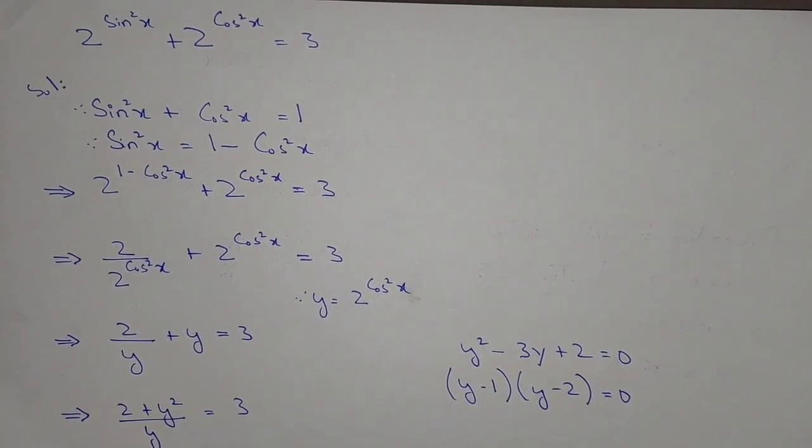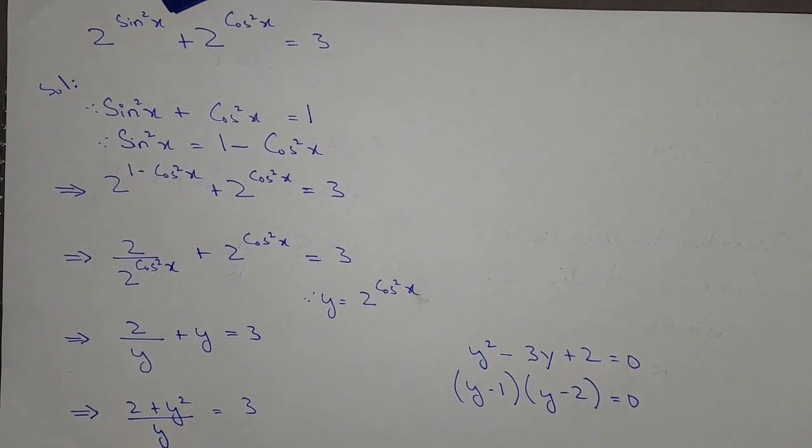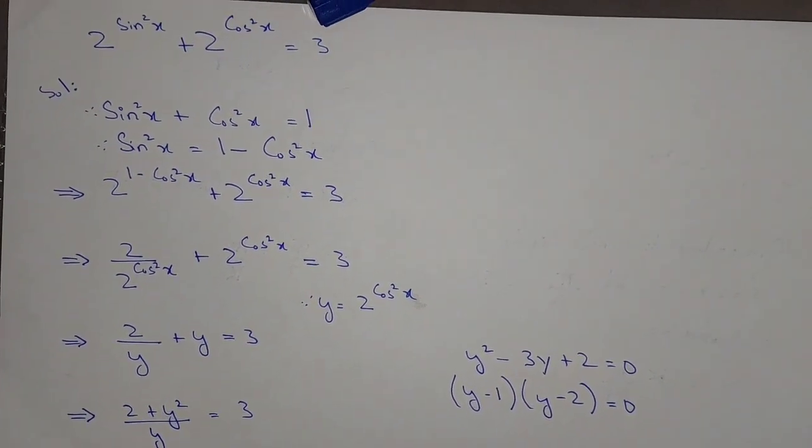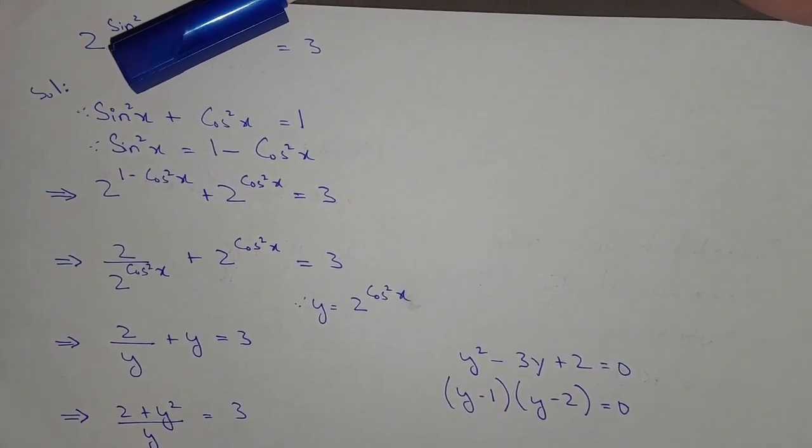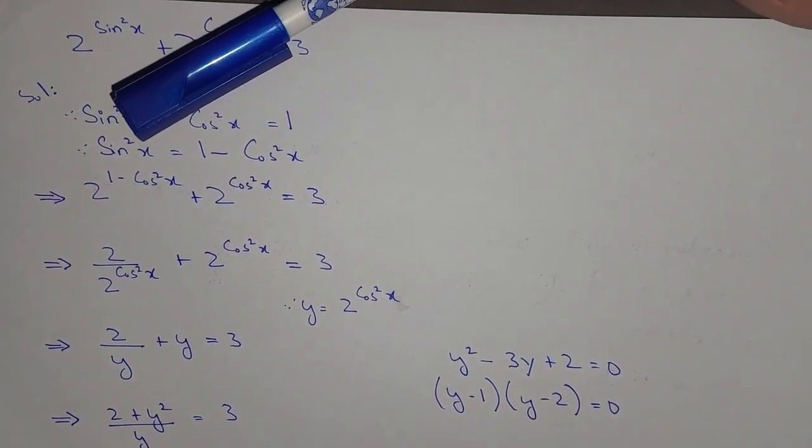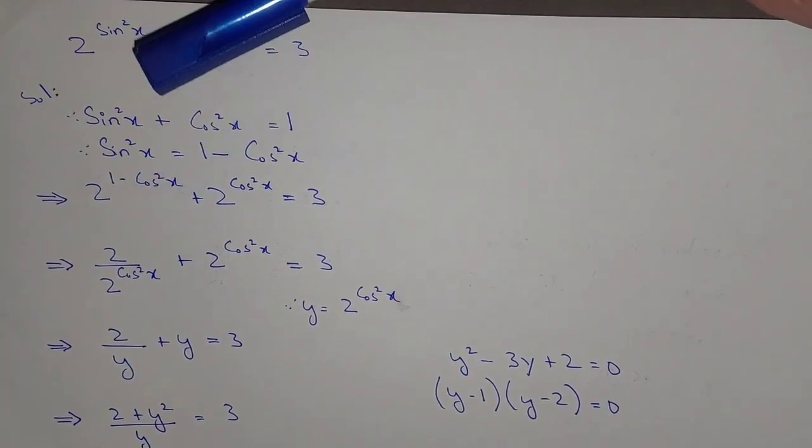Hello, what's up guys, welcome to the new video. Here we have the question: 2^(sin²x) + 2^(cos²x) = 3. We know that sin²x + cos²x = 1, so sin²x can be written as 1 - cos²x. Now putting these values in the equation.